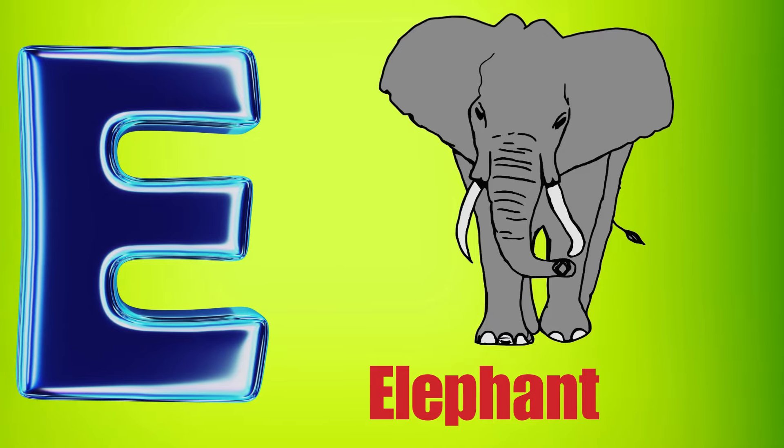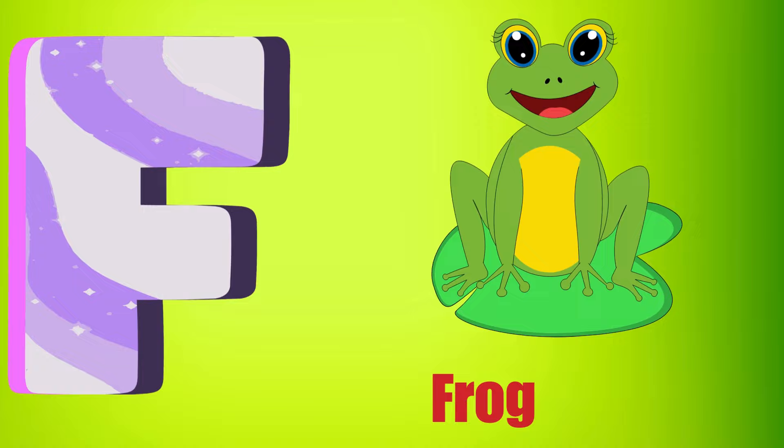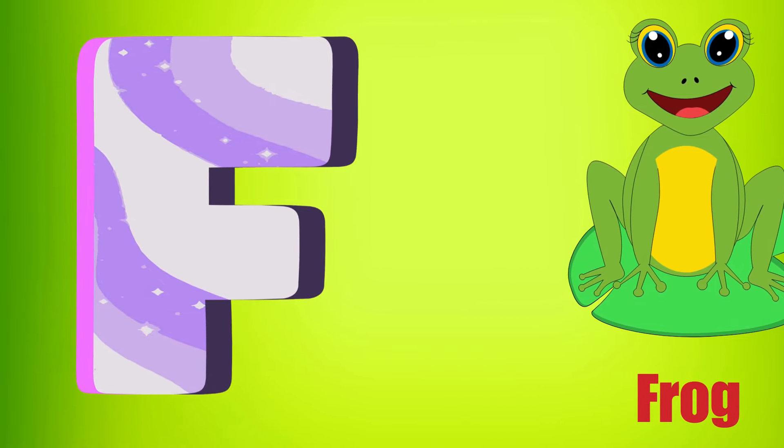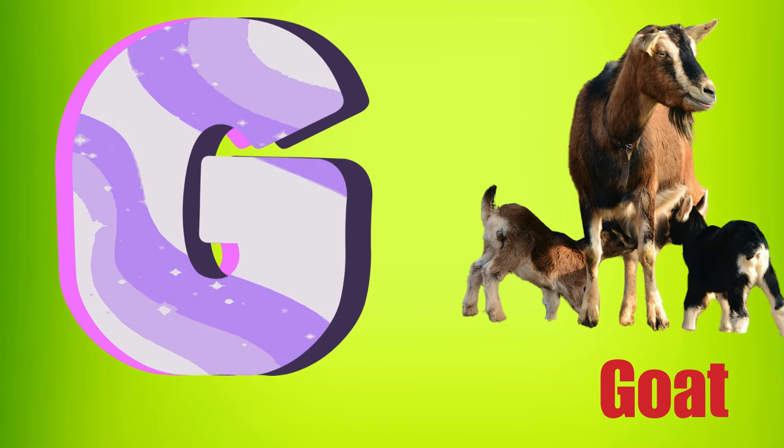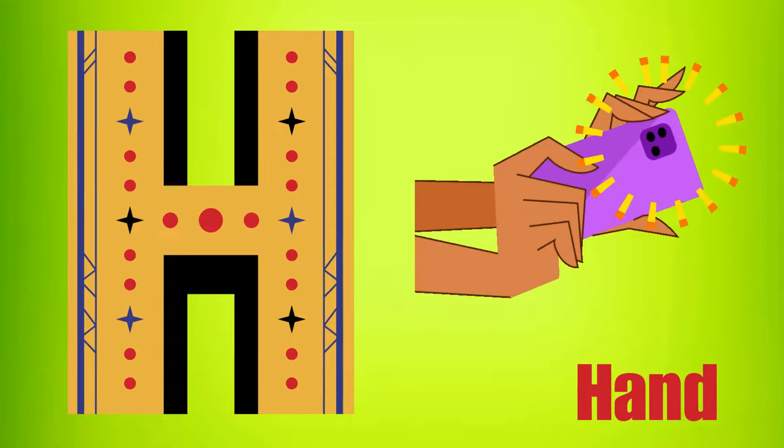E is for Elephant, E-E-Elephant. F is for Frog, F-F-Frog. G is for Goat, G-G-Goat. H is for Hand, H-H-H-Hand.